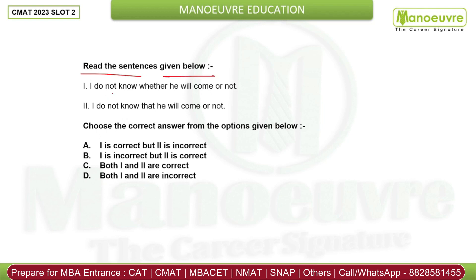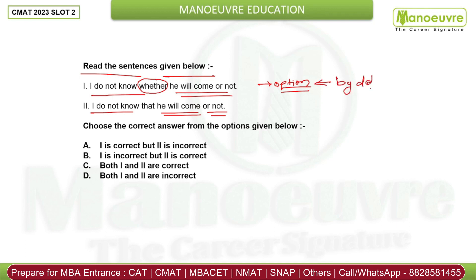Read the sentences given below. First: 'I do not know whether he will come or not.' Second: 'I do not know that he will come or not.' Here, 'whether' is used for two options or two situations — it is the right conjunction pair with 'or'. But using 'that...or' is a wrong pair of conjunctions. So the first sentence is correct and the second is incorrect. Answer should be A.